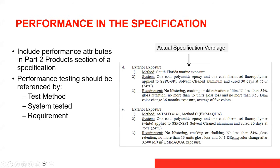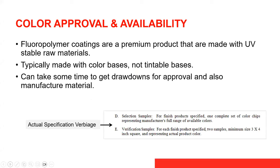With regards to color approval and availability, fluoropolymer coatings are a very premium product made with UV-stable raw materials and typically made with color bases — not tintable bases that can be easily made on the fly. It can take some time to get drawdowns for approval and manufacture the material, so be prepared for that depending on which manufacturer you go with. Include the actual specification verbiage regarding the request for samples.